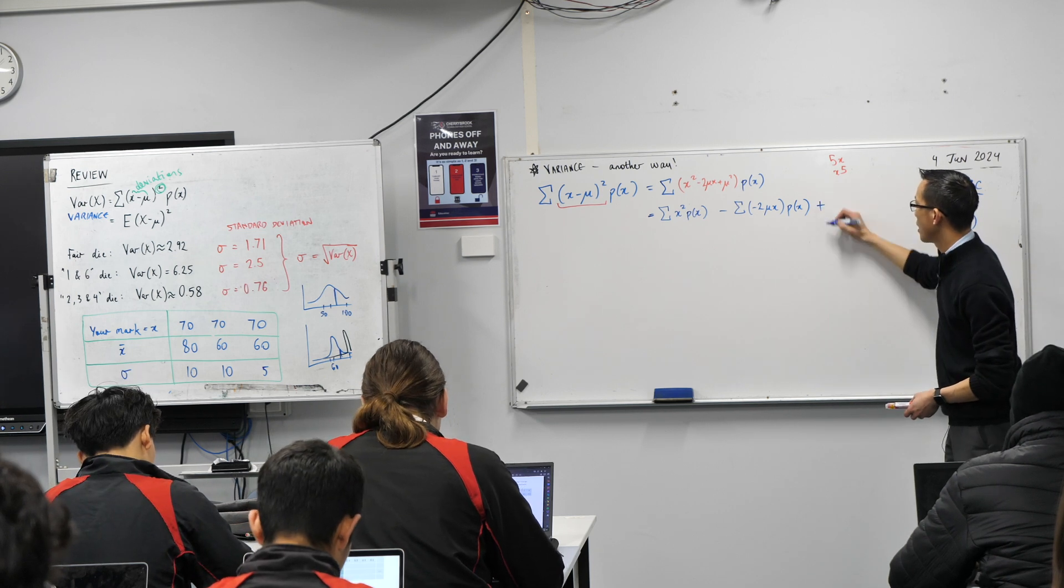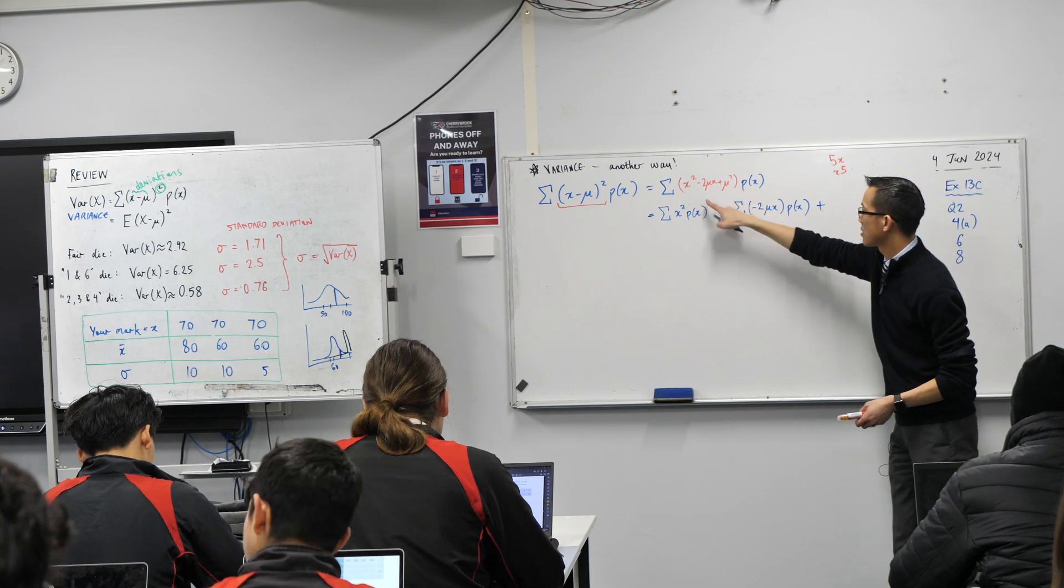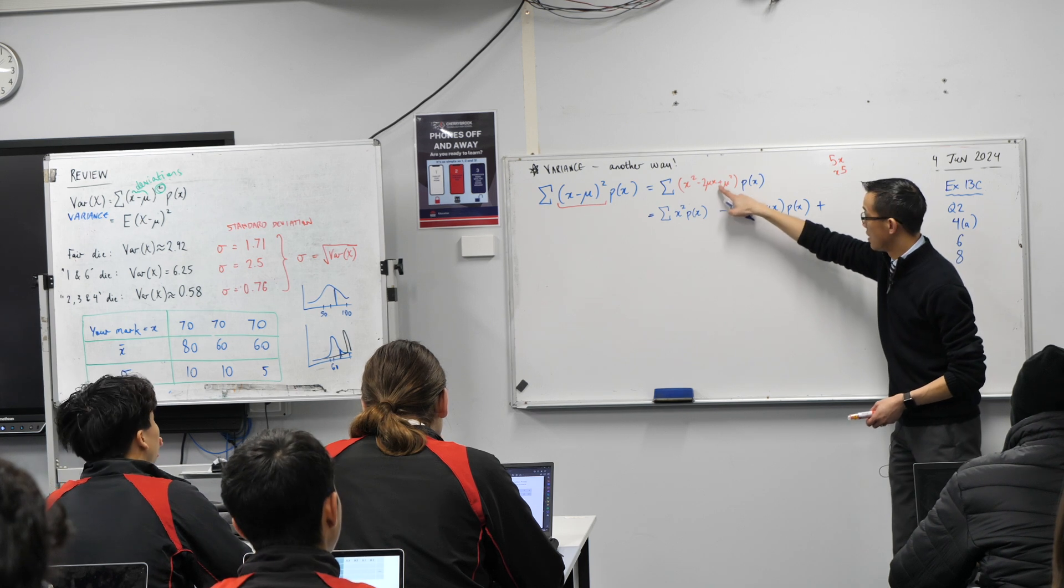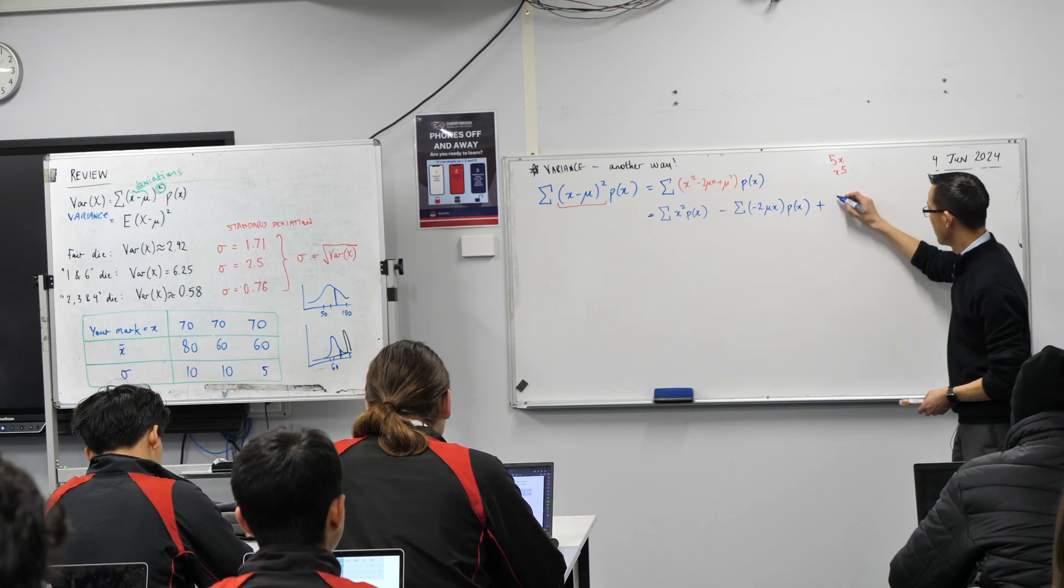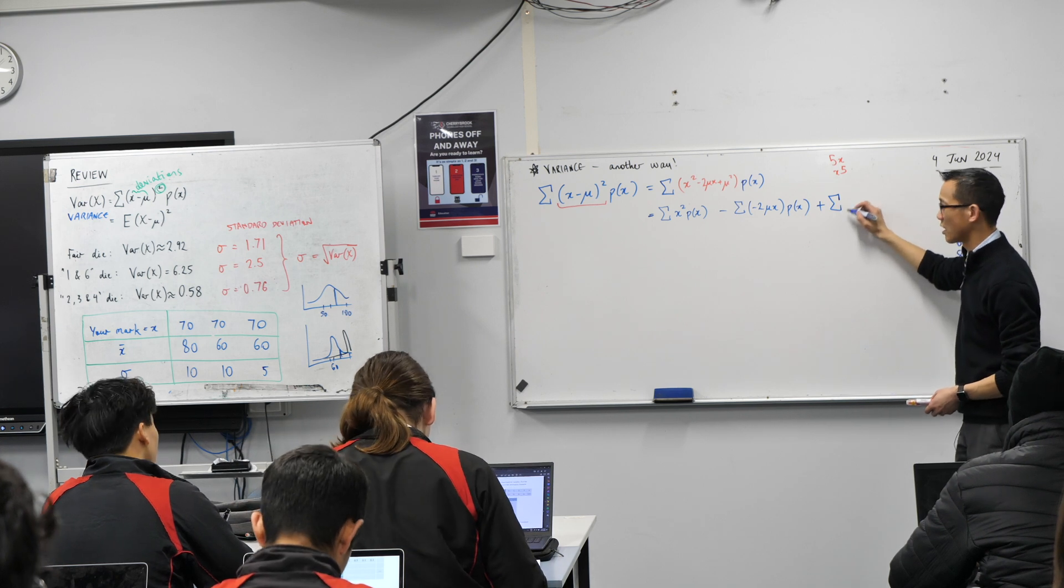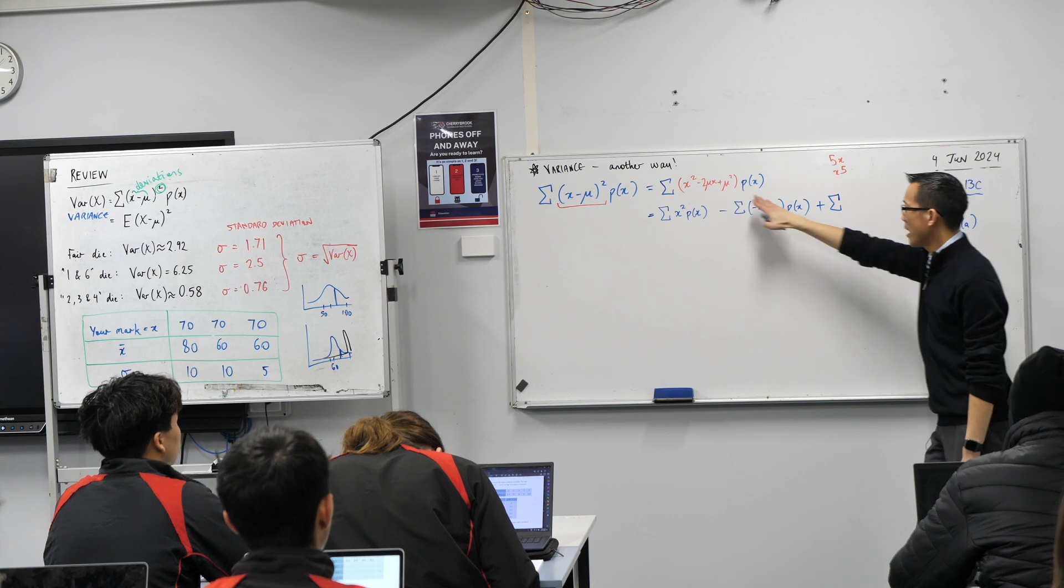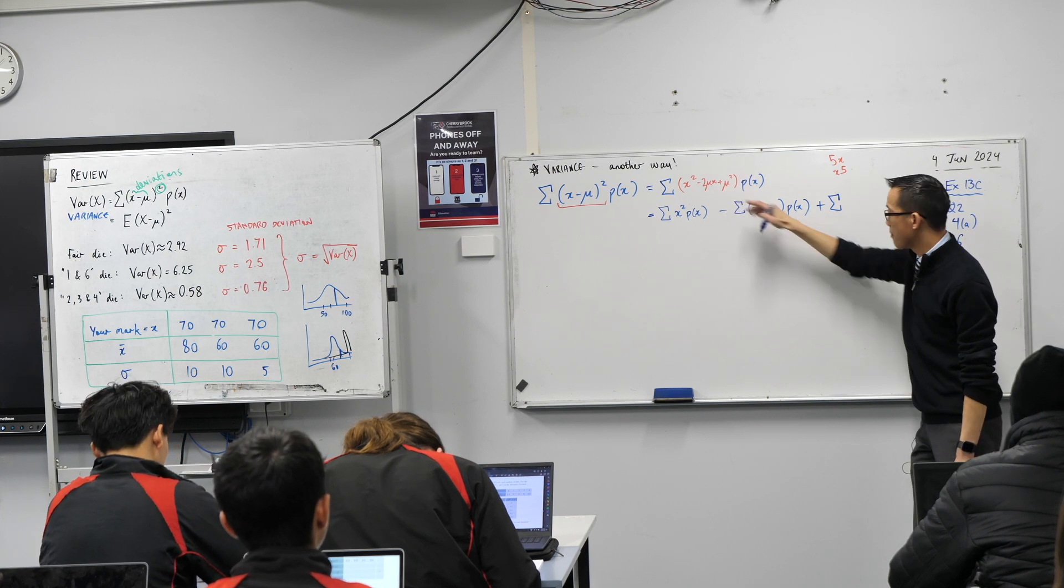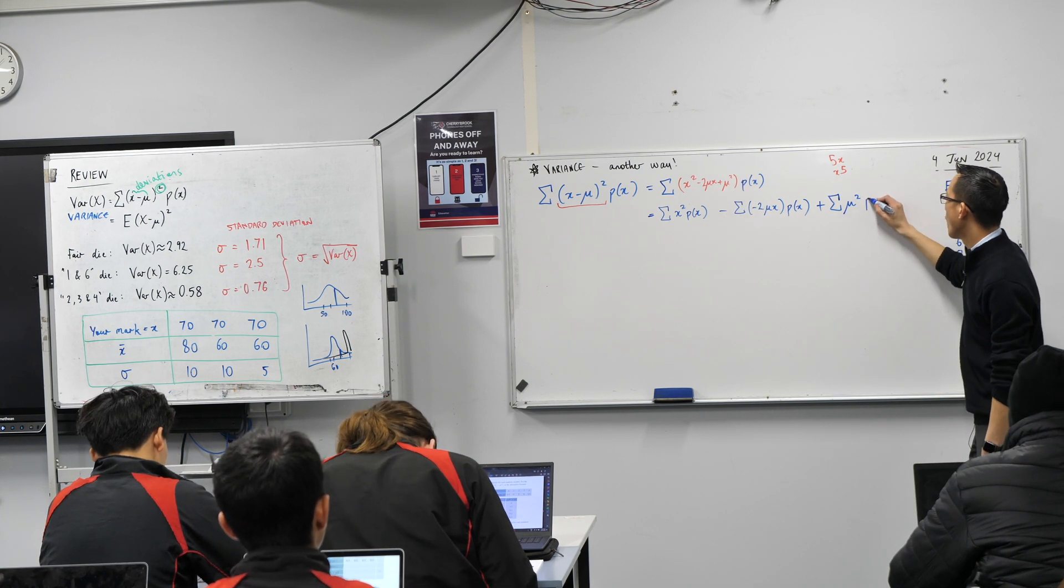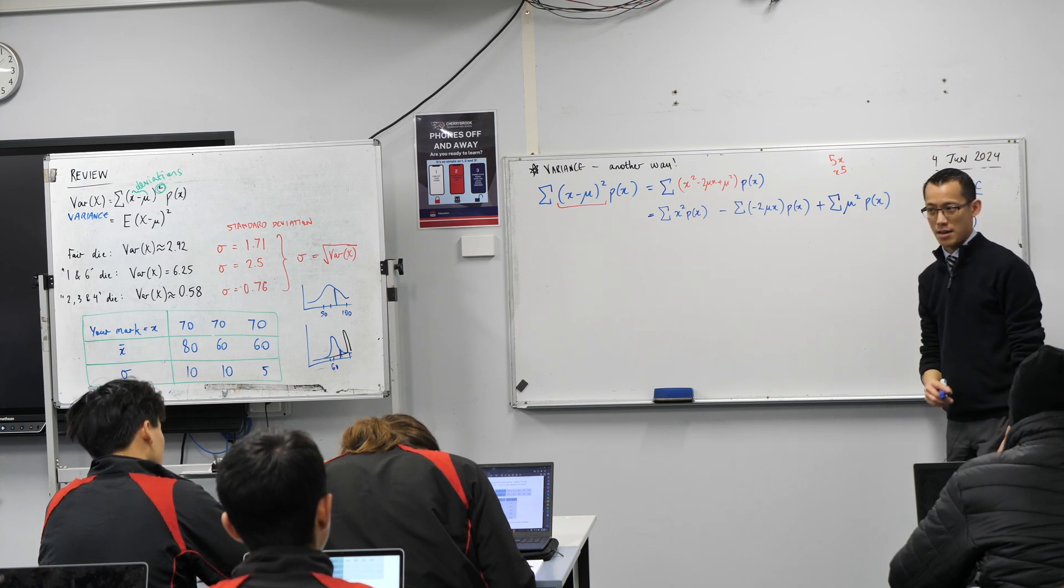And here comes pile number three. Just watch out. See these signs here? That's minus and minus. This is plus. That's why I've got a plus here. It's still a pile, so I'm adding up all these things. Can you tell me what to write next? Yeah. Yeah, this is the last part, right? Mu squared. And again, I'm always multiplying by p of x. Okay.